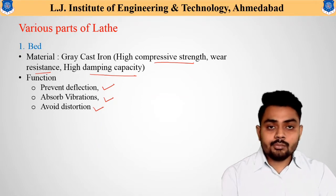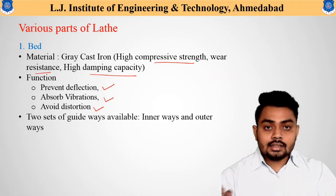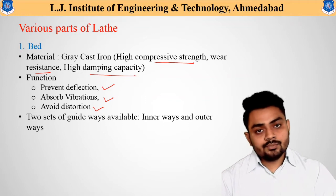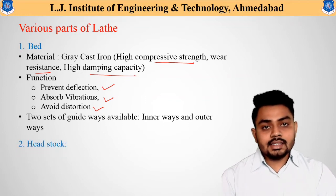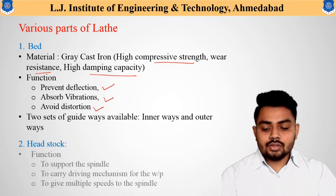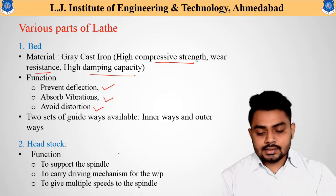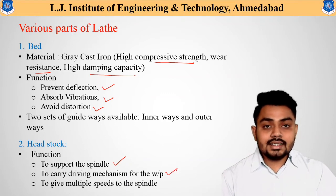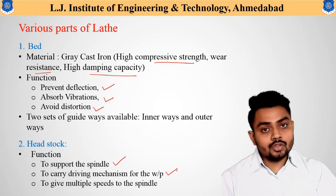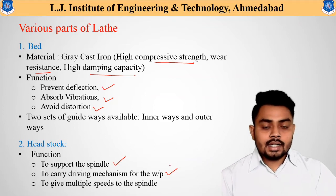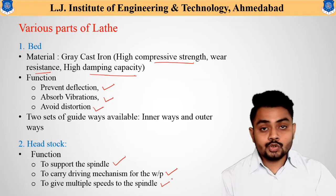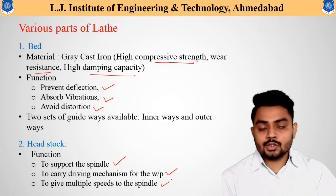The main guide ways and outer ways are also part of the bed. The next important part is the headstock. This headstock is helpful to support the spindle — that is the first function of the headstock. Similarly, it carries the driving mechanism which provides motion to the workpiece, and it also consists of different mechanisms that provide multiple speed variations to the spindle.